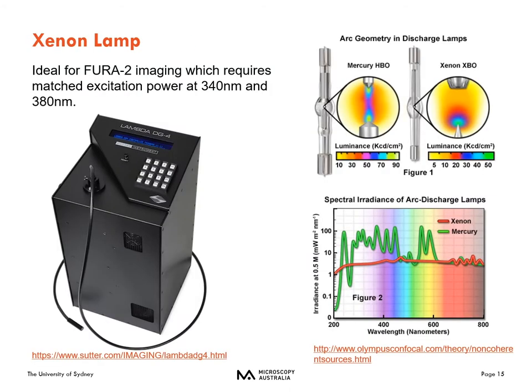Another common fluorescence light source is the xenon lamp. Its spectrum has far fewer peaks than the mercury lamp, which is particularly important for applications like FURA-2 imaging requiring matched excitation power at 340 and 380 nanometer excitation wavelengths. This lamp is also very temperature dependent, so it needs a long warm-up and cool-down time like the mercury lamp.